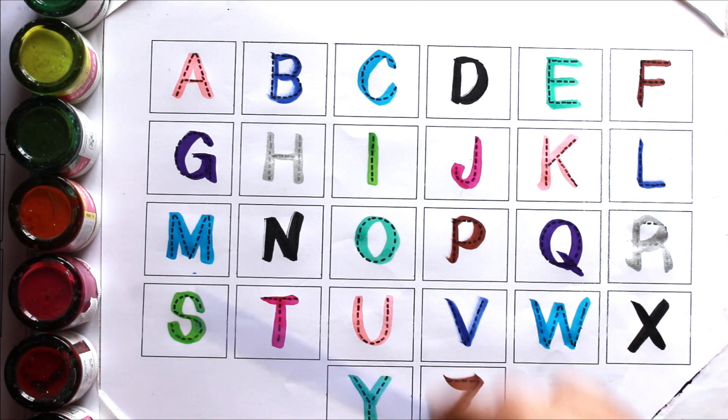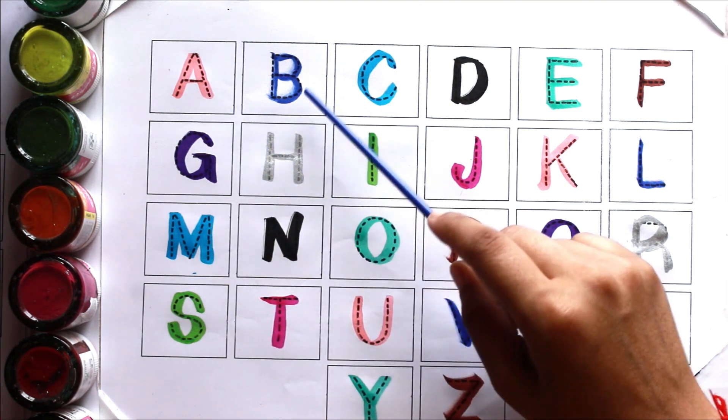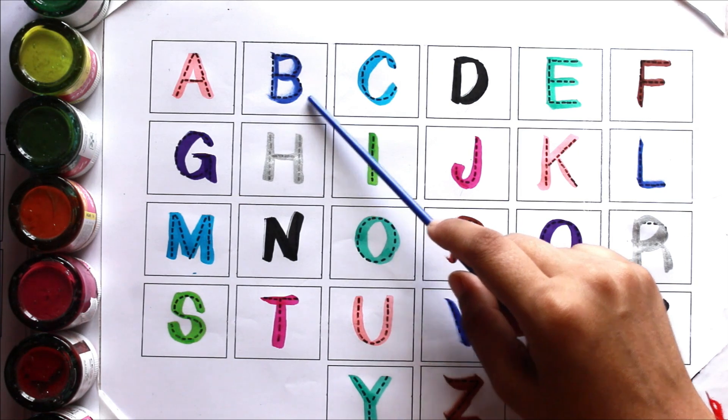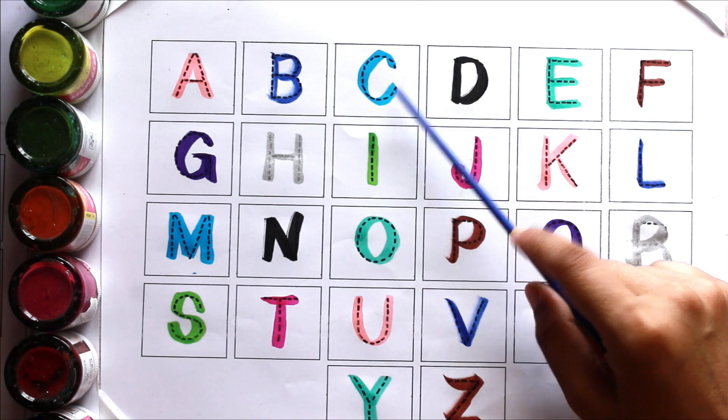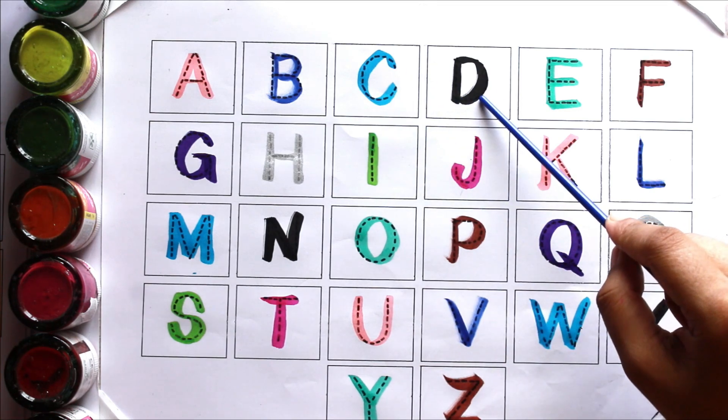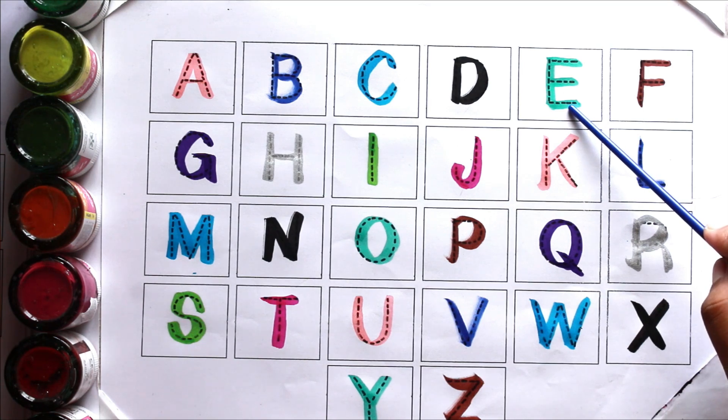Let's again. A. A for apple. B. B for ball. C. C for cow. D. D for doll. E. E for egg.